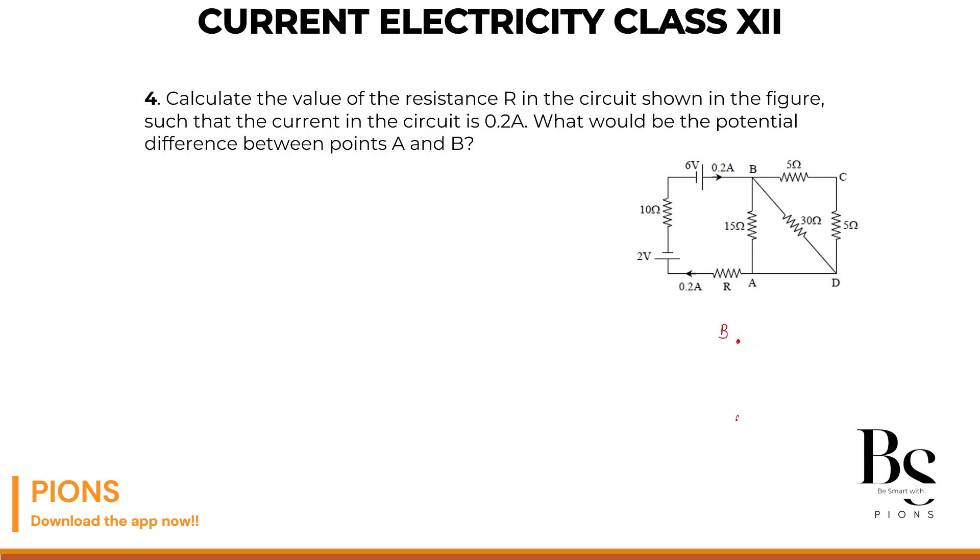And let's take this point as A. This is our 15 ohm as per the question. This is our 30 ohm as per the question. And that 5 and 5, they are in series. So if they are in series, that will give you how much equivalent? 10 ohms. Correct.